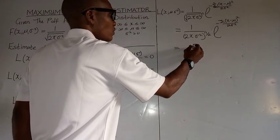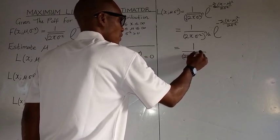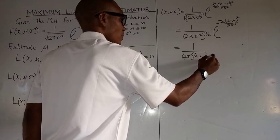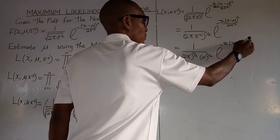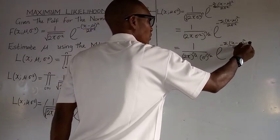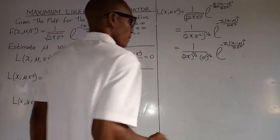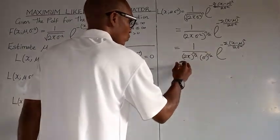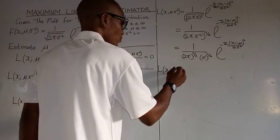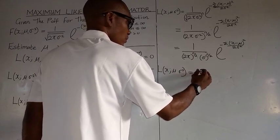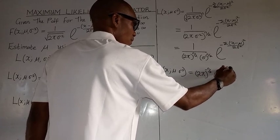We put this together to get 1 all over 2 pi to the power n all over 2. Nothing has changed. We can decide to rewrite sigma as sigma raised to the power of minus n all over 2.